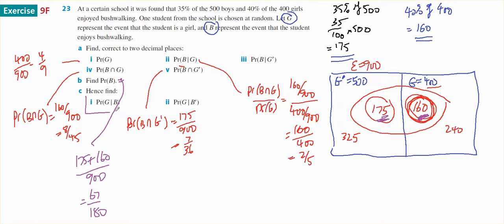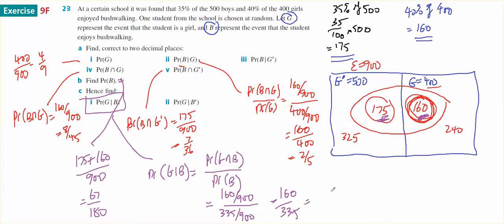And that brings me to the last two questions. Part C. Which is the probability of a girl given that they bushwalk. So it's conditional. We'll use the rule. And the rule will say it's the probability of girl intersect bushwalk over the probability of bushwalk, which would be girl intersect bushwalk is 160 on 900 divided by probability of bushwalk, which is 335 on 900.